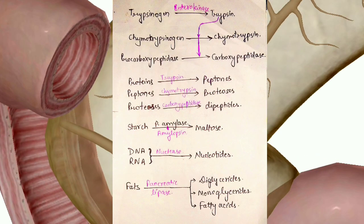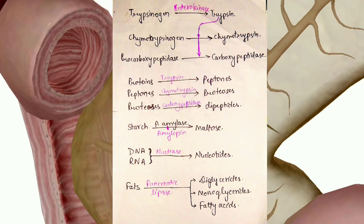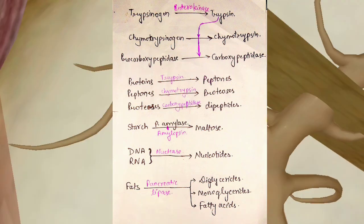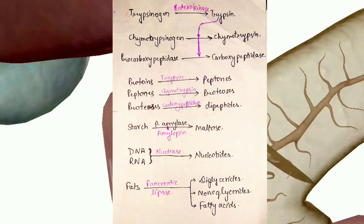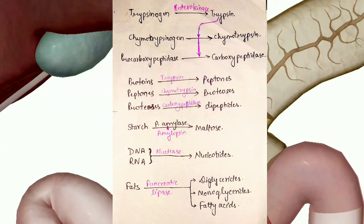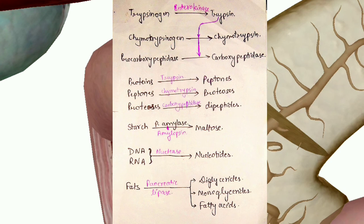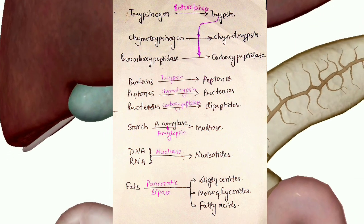It contains trypsinogen, which gets activated to trypsin in presence of enterokinase present in intestinal juice. Trypsin then further activates chymotrypsinogen and procarboxypeptidase to chymotrypsin and carboxypeptidase. These three break proteins, peptones, and proteoses simultaneously into peptones, proteoses, and dipeptides.